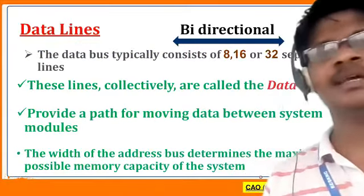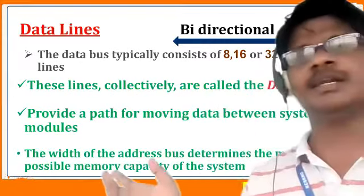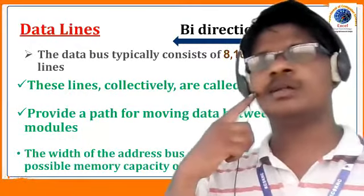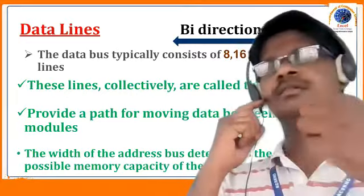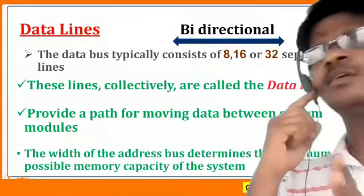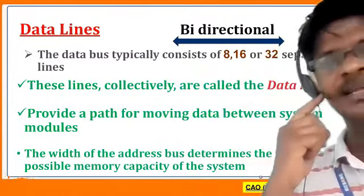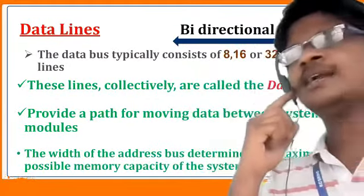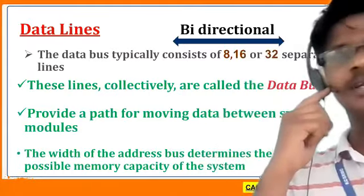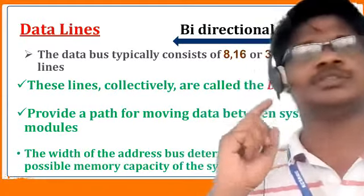Next, we will see about the data bus or data lines. These lines are collectively called the data bus. It provides a path for moving data between system modules. The address bus is used to designate the data — pointing to the source or destination — whereas the data bus is used to fetch the data from the preferred module. The data bus is bidirectional, whereas the address bus is unidirectional.